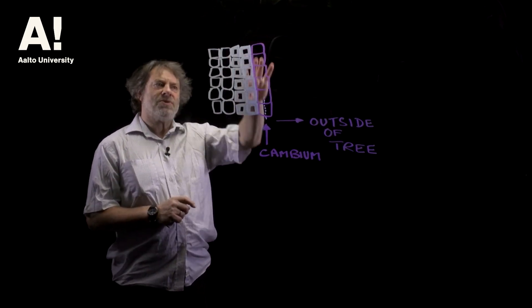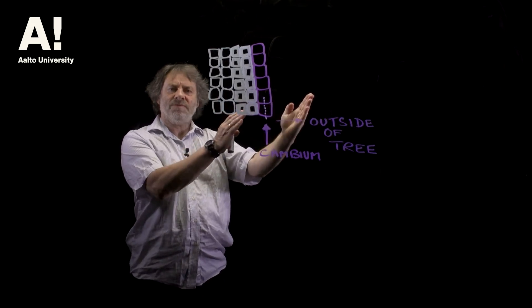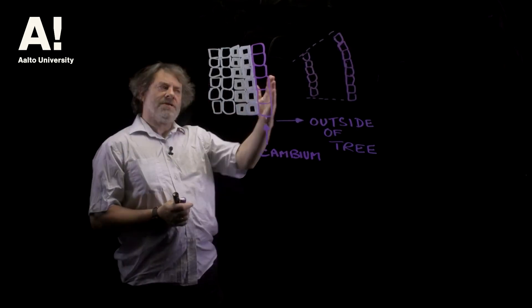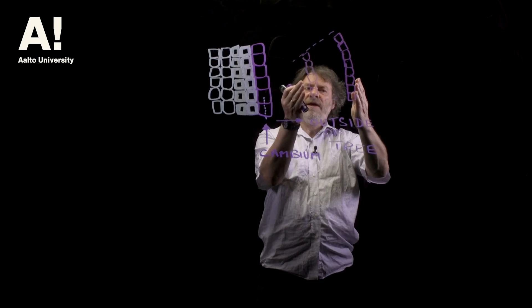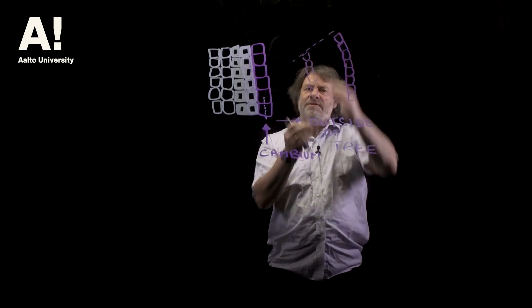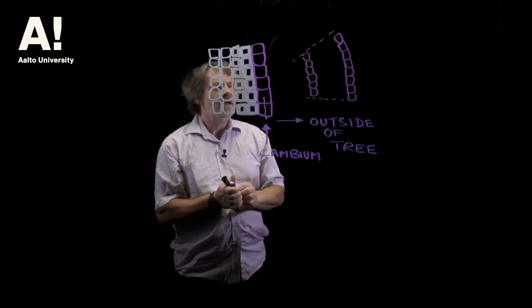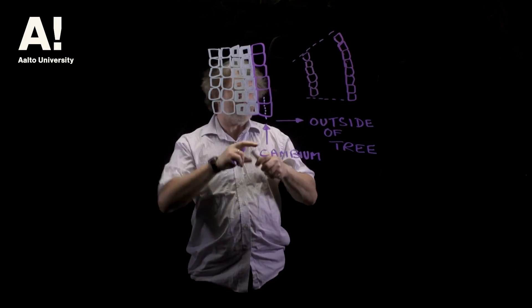So another layer of cells, more latewood cells, the cambium's moving out. Okay so the cambium's moving out and as it does so obviously the radius is increasing and that means you've got to have cell division here.